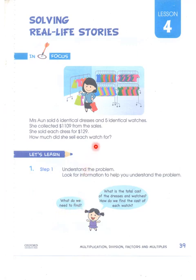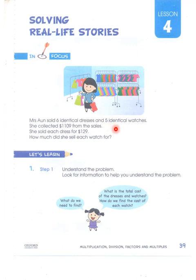What do we need to find? We need to find the price of one watch. What is the total cost of the dresses and the watches? How do we find the cost of each watch? First, we know that one dress was $129. There were six dresses, so we'll multiply 129 by 6 to get the total cost of the dresses. Whatever money is left, we'll divide by five to get the cost of one watch. It's very simple.